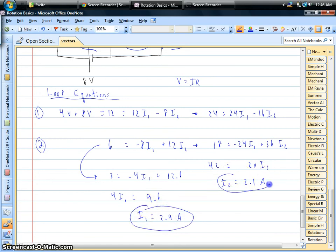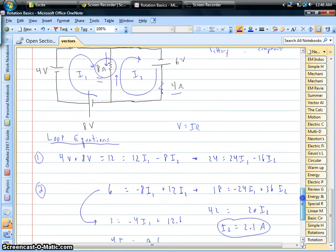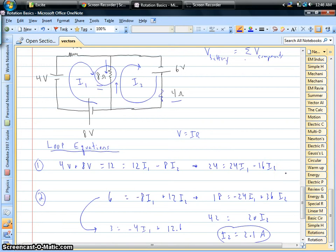So we've got the two currents. Back on our picture, we've got 2.4 amps circulating clockwise in the left loop, and in the right loop we've got 2.1 amps circulating clockwise. So we've got the currents going through all the batteries and both of those 4-ohm resistors.